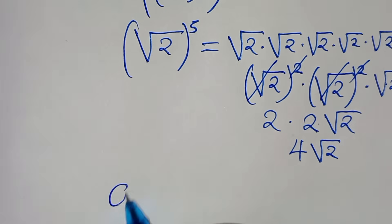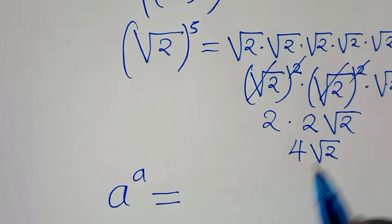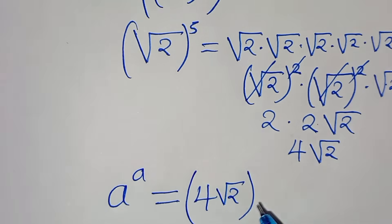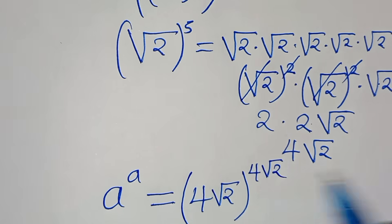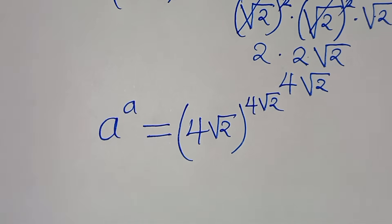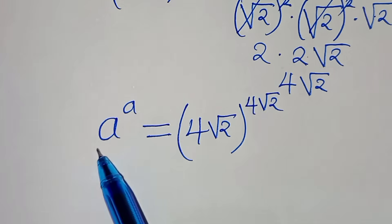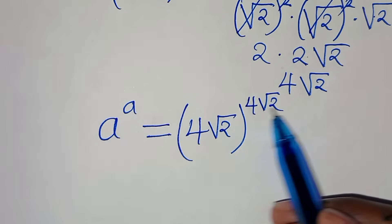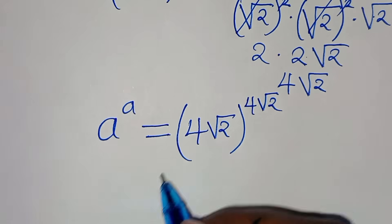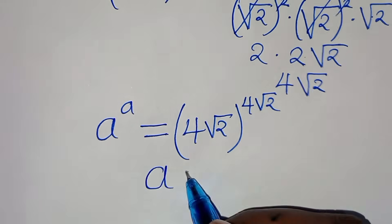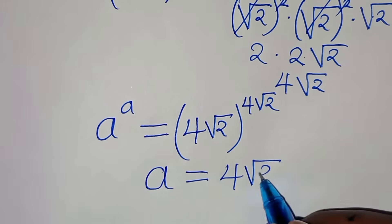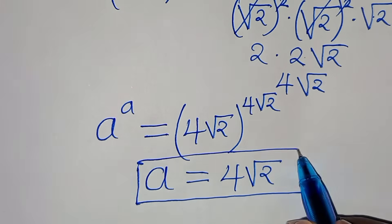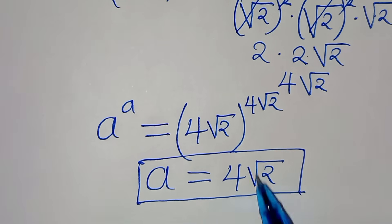Substituting square root of 2 to the power of 5 as 4 square root of 2, we have a to the power of a equal to 4 square root of 2, raised to the power of 4 square root of 2. Comparing the base and exponent on both sides, they match, so a equals 4 square root of 2. This is the solution to the exponential problem.